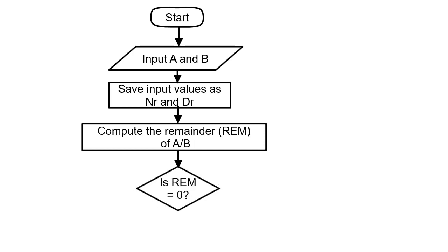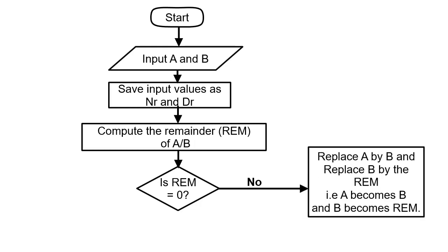The next step is to compute the remainder of a divided by b. Then we make a decision: is the remainder equal to zero? If yes, something will happen; if no, another thing will happen. If the answer is no, we replace a with b and replace b with the remainder.